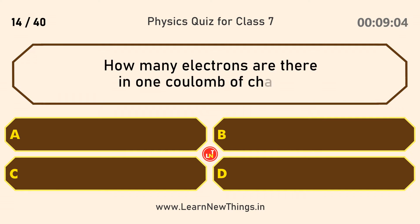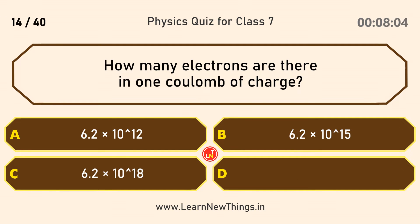How many electrons are there in one coulomb of charge? 6.2 × 10 to the power of 18.